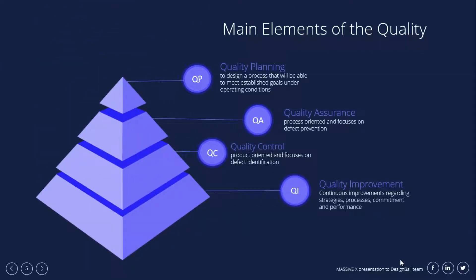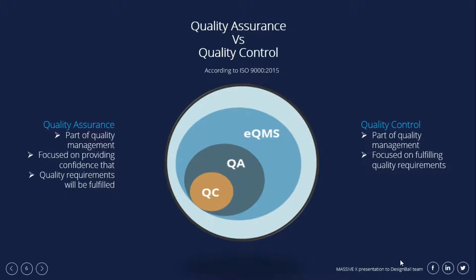Now let's look at the main elements of quality: quality planning, quality assurance, quality control, and quality improvement. Quality planning is designing a process that will meet established goals under operating conditions. Quality assurance is process-oriented and focuses on defect prevention. Quality control is product-oriented and focuses on defect identification. Quality improvement is a continuous improvement regarding strategies, processes, commitments, and performance.